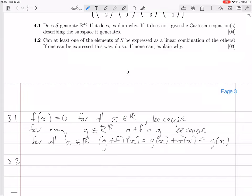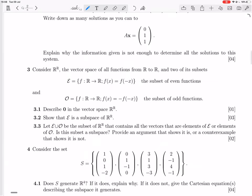So now we can do 3.2. Show that E, the set of even functions, is a subspace. So you want to show that this E contains a zero vector and is closed under linear combinations, or is closed under addition and scalar multiplication.